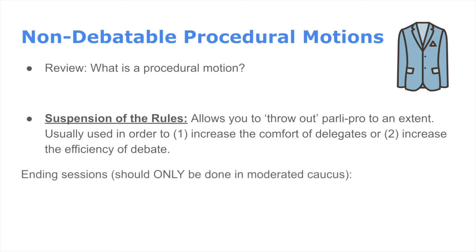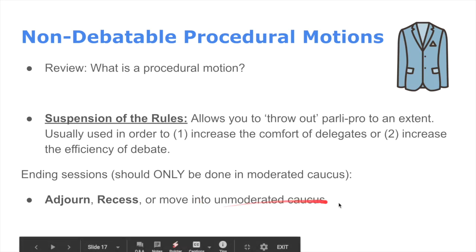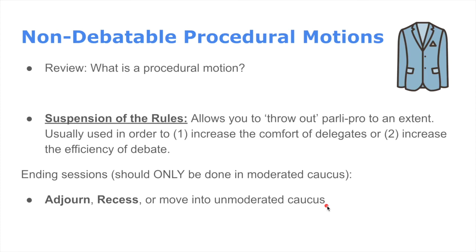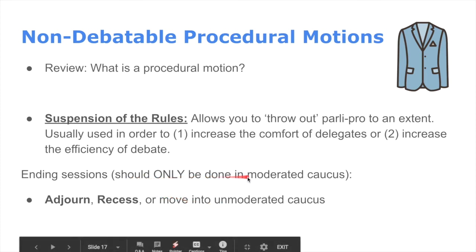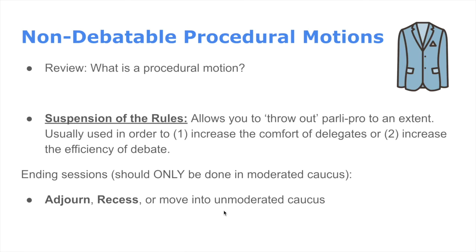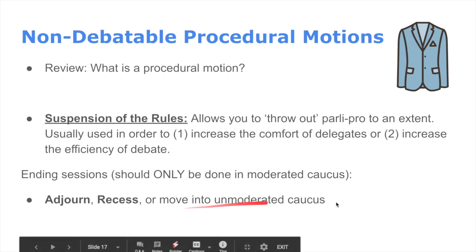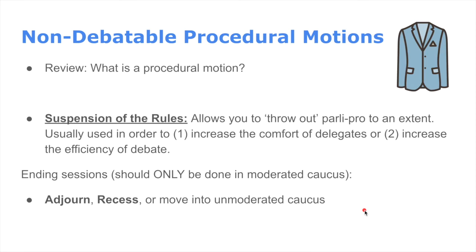The other non-debatable procedural motions involve ending sessions. The first is one we're probably already familiar with: moving from moderated caucus to unmoderated caucus. These motions can only happen in moderated caucus, because you don't want to end debate when someone's in the middle of presenting a resolution. The chair will usually ask you to specify a certain amount of time — for example, 'I motion to move into unmoderated caucus for 15 minutes.'